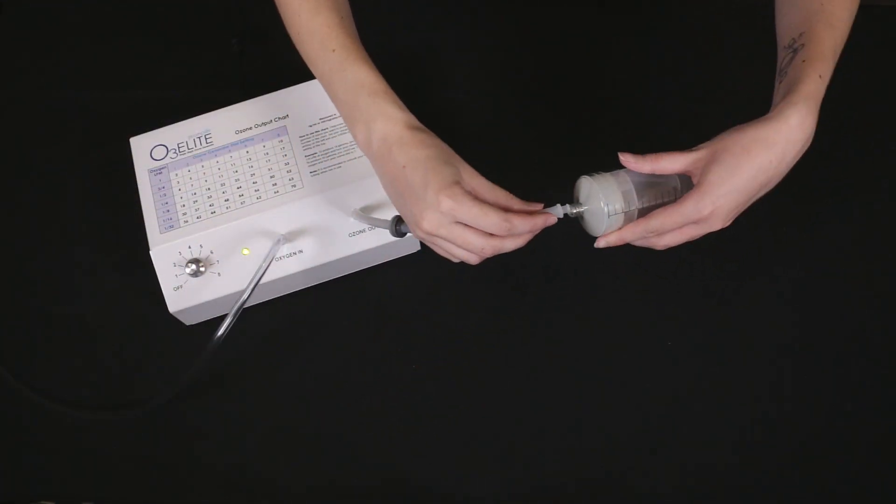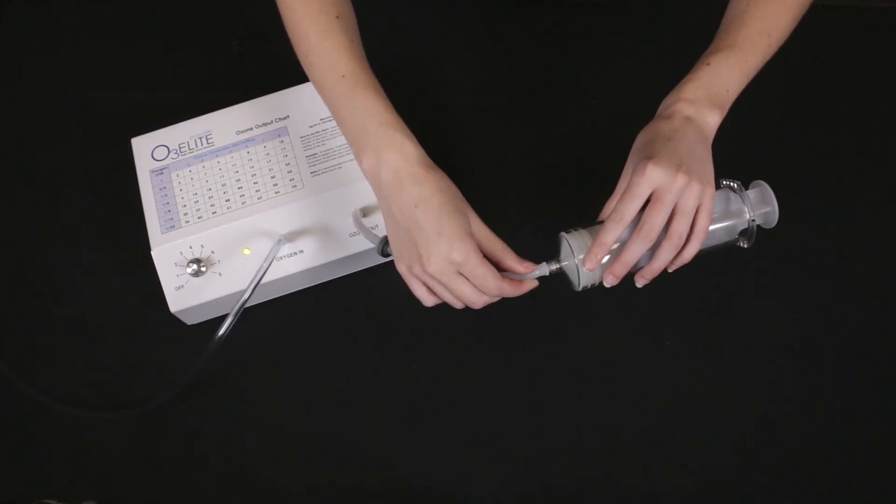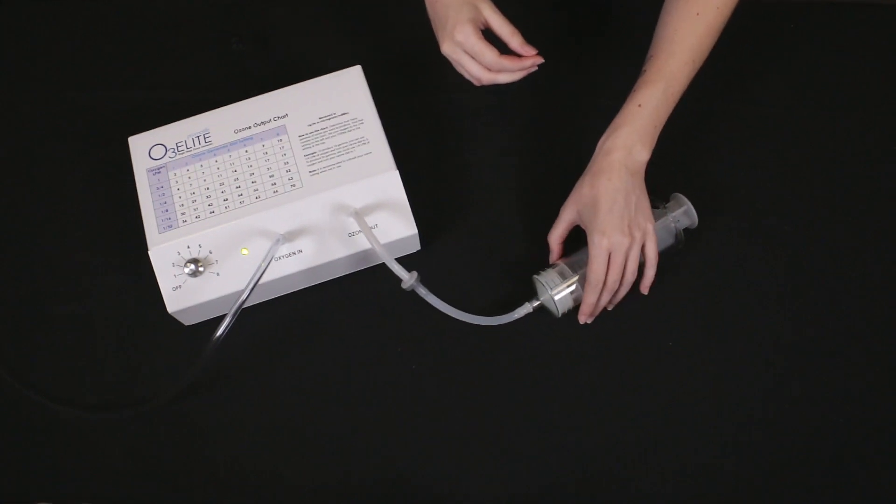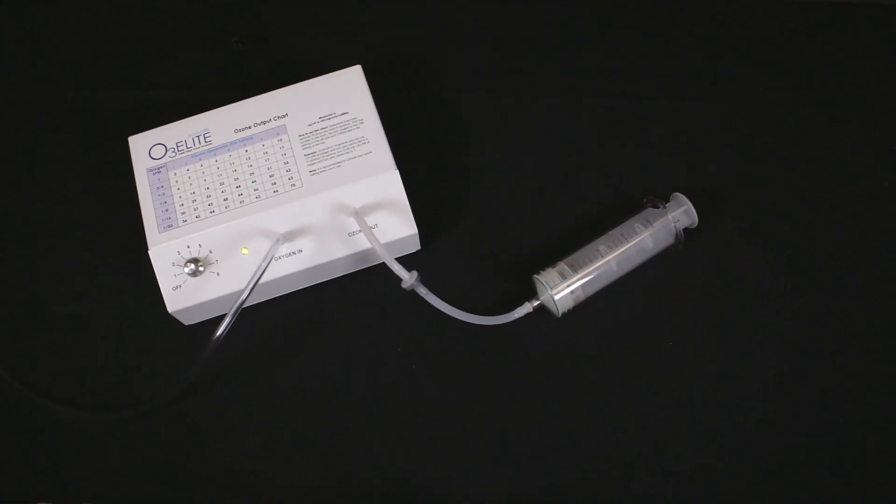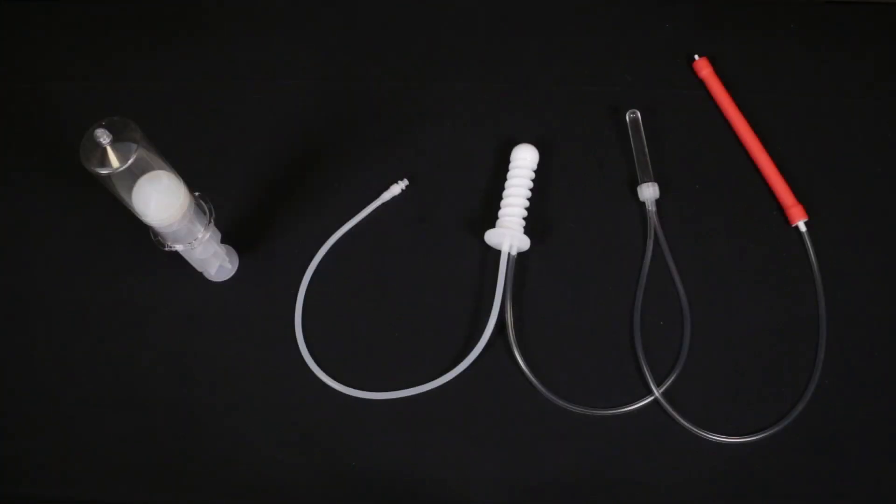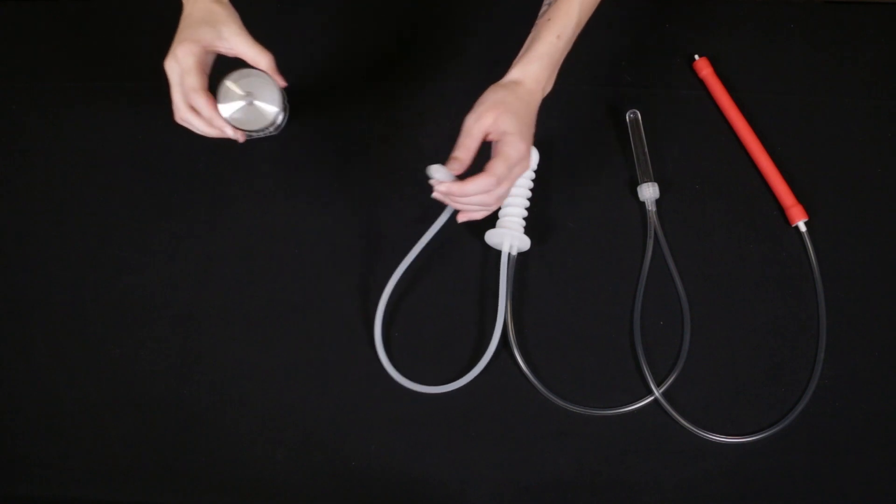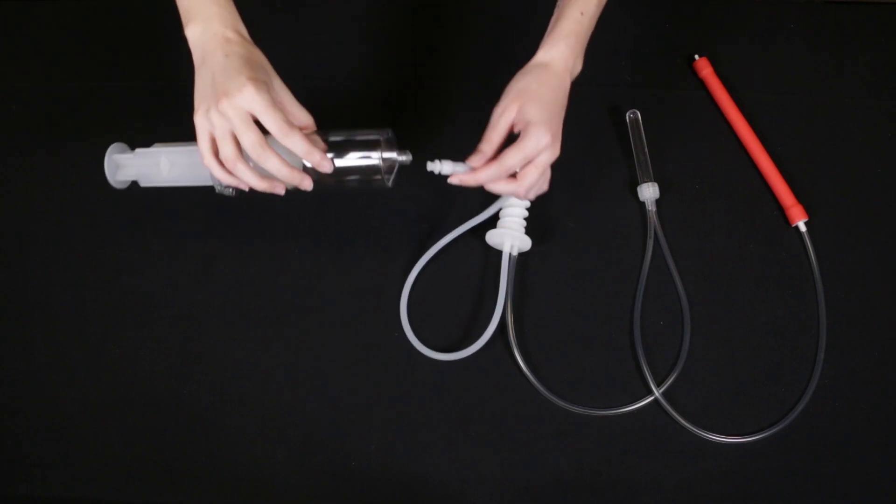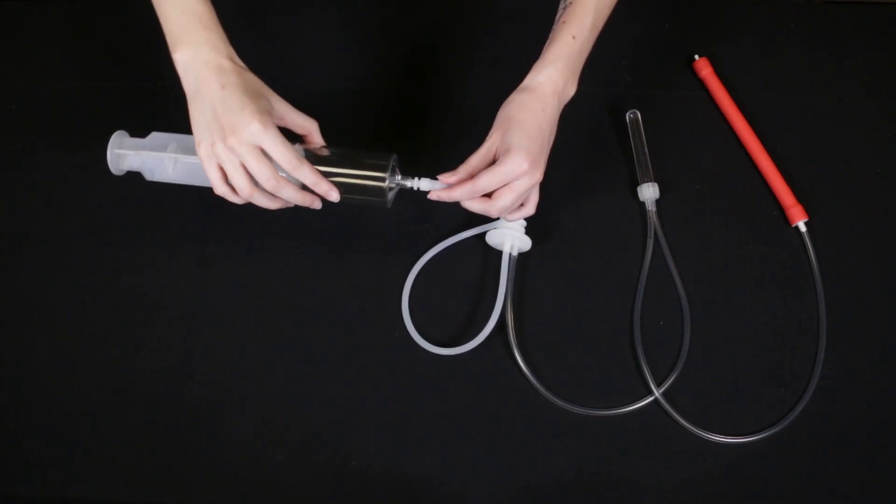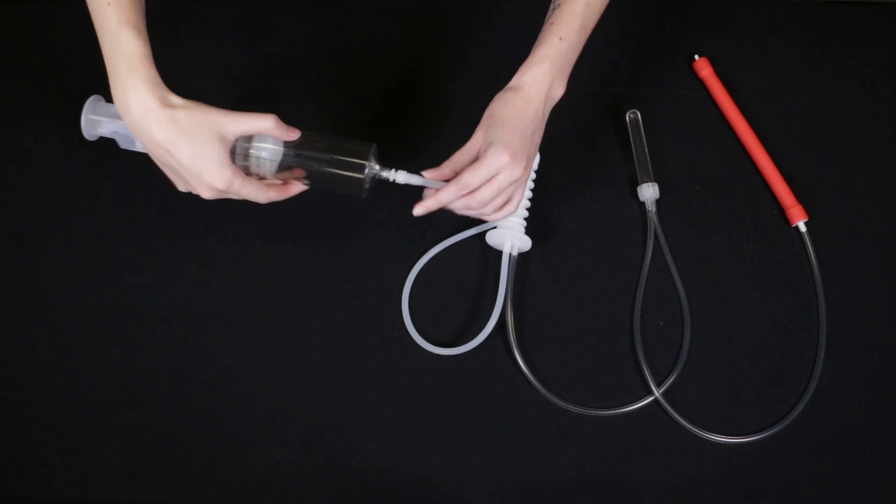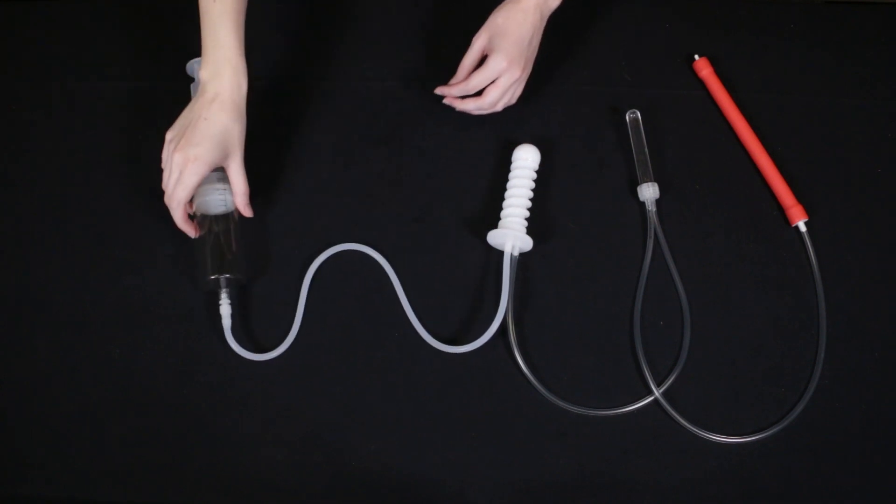Now to use the kit with an ozone syringe, leave the tubing with the check valve connected to the generator and then attach the syringe to this tubing. Fill the syringe to your chosen amount and then remove the syringe. You will then connect the syringe to the silicone tubing coming out of the center of the probe. Once the probe is in place, you can slowly push the plunger to administer ozone. This concludes how to connect and use the kit with an ozone syringe.